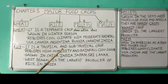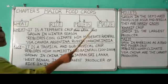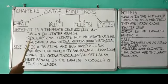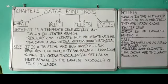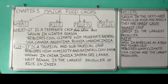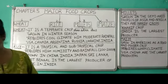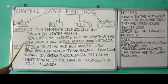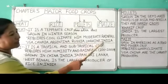Wheat is grown in the winter season. It requires a cool climate with moderate rainfall — as it grows in winter, it needs cool climate. The temperature required is around 20 to 24 degrees Celsius and a moderate rainfall of 50 to 70 centimeters. You can check this in the textbook on page 153.